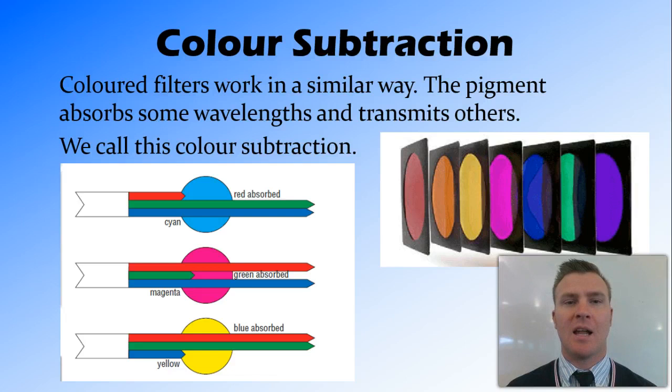So we call this colour subtraction because we're taking away from the wavelengths of light that are actually there.